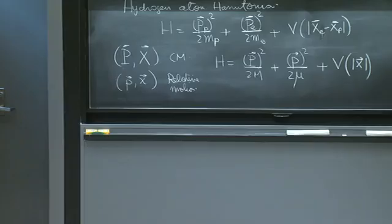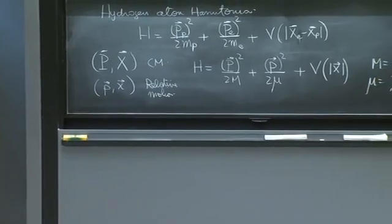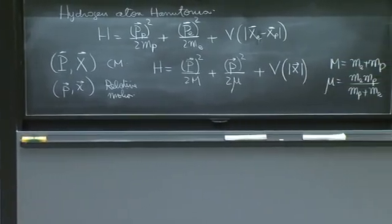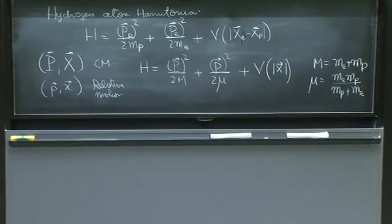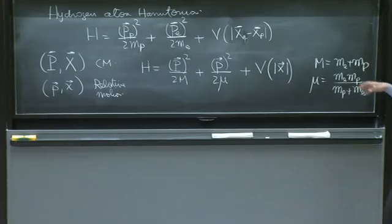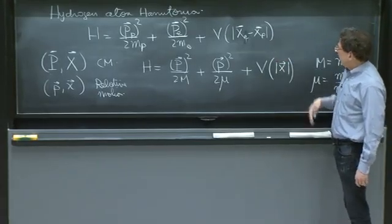In here, the mass capital M was the sum of the two masses, and the relative mass was the product of the masses over the sum, which has the property that if one of the two masses is much bigger than the other, it gives you a mass μ roughly equal to the lower mass. So this is the hydrogen atom reformulated.